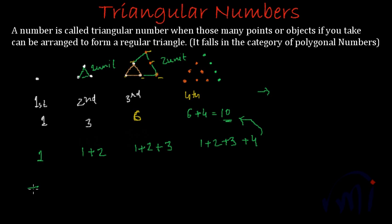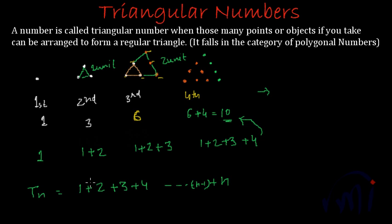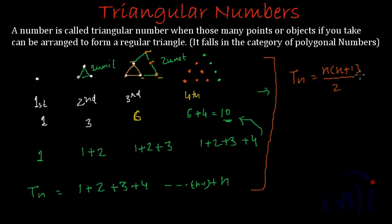So if we want to find the nth triangular number, or Tn, it will be the sum of natural numbers: 1 plus 2 plus 3 plus 4, continuing up to n. The previous triangular number is the same sum up to n minus 1. So to find the nth triangular number you are actually finding the sum of the first n natural numbers. We have already discussed in a previous video that the sum of the first n natural numbers is n(n+1)/2. So the nth triangular number Tn equals n(n+1)/2.